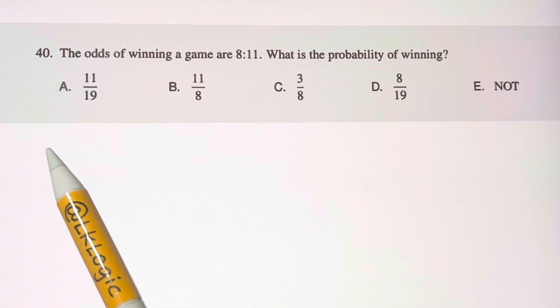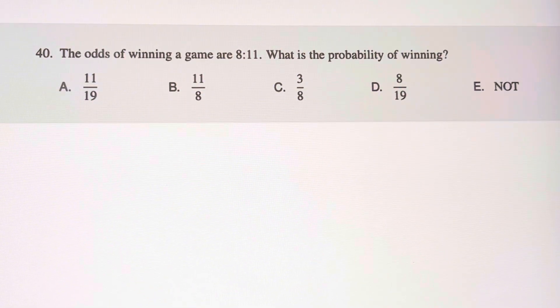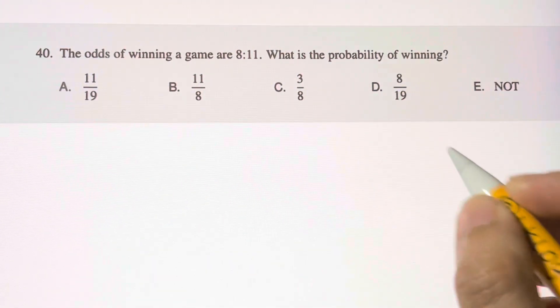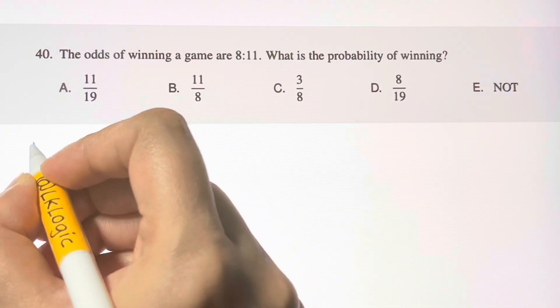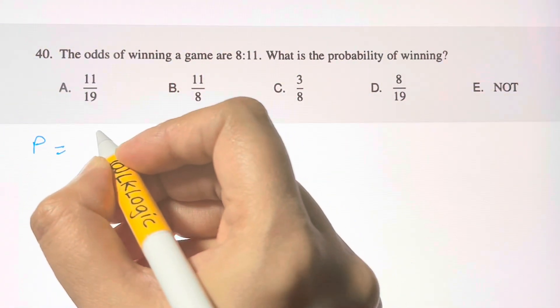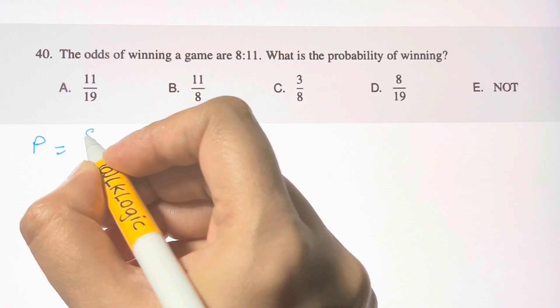So basically, you know what is probability, right? Probability is given by successful outcomes divided by total number of outcomes.